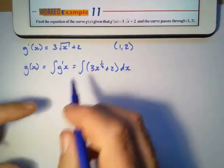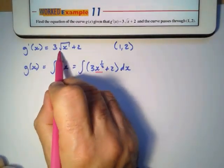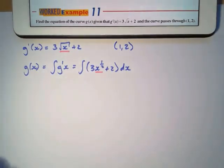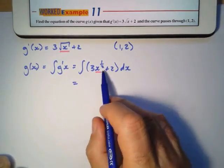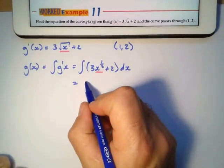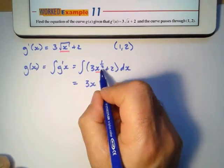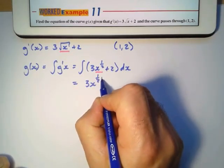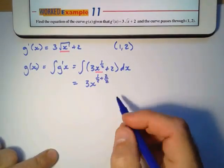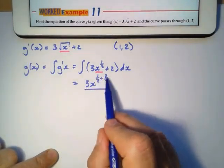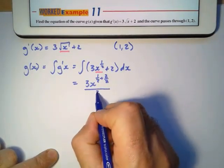Now, let's integrate this. The integral of 3x to the power half is 3x to the power half plus 1. If I add 1, I'm adding 2 over 2 because 2 over 2 is 1. Divide by my new power half plus 2 over 2 is 3 over 2.